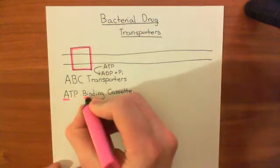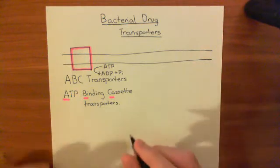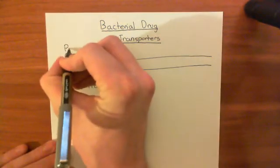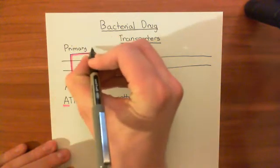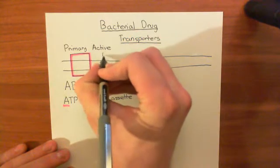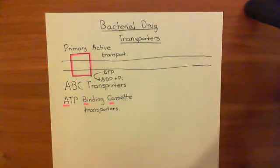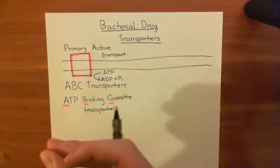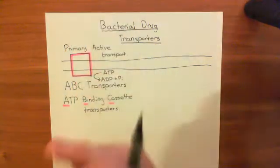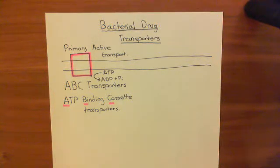The name stands for ATP binding cassette transporters, and ABC transporters work by primary active transport. Of all five families found in bacterial cells, they are the only ones which work by primary active transport — all the others work by secondary active transport. Primary active transport means the energy for that manoeuvre comes from the hydrolysis of ATP.